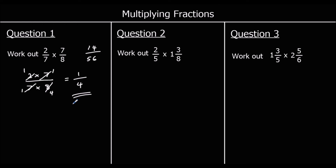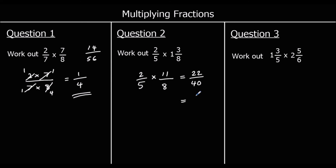Question two: two-fifths times one and three-eighths. We need to change one and three-eighths into a top-heavy fraction — one whole one is eight-eighths plus three-eighths, which is eleven-eighths. So we've got two times eleven, which is twenty-two, over five times eight, which is forty. They're both even, so we half the top and the bottom, giving us eleven-twentieths.